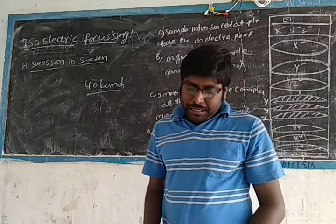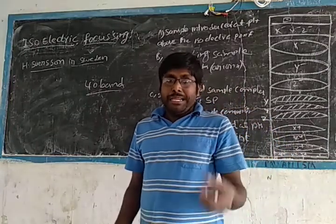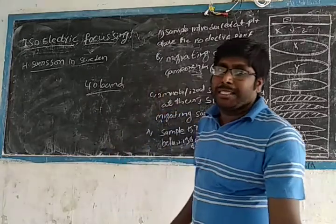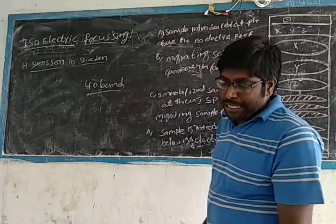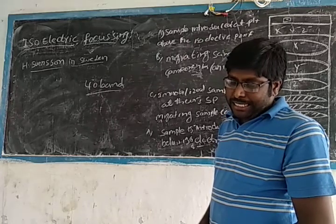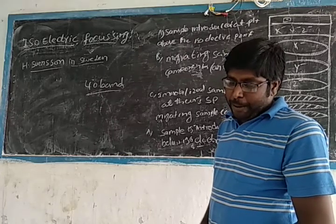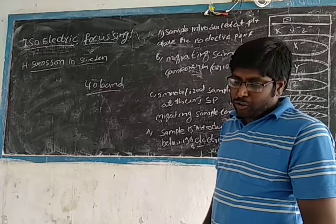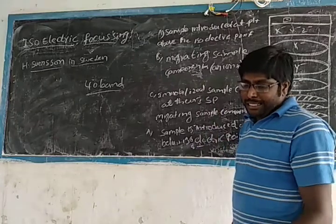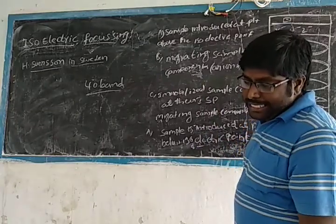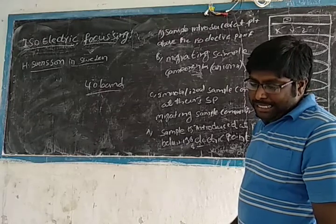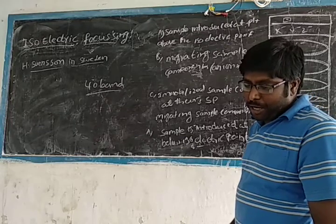With increase in pH, the number of carboxyl groups carrying negative charges increases, while the number of positive charge groups decreases. As pH rises, the number of NH3 groups carrying negative charges increases, and the number of positive charge groups decrease, and net positive charge decreases.